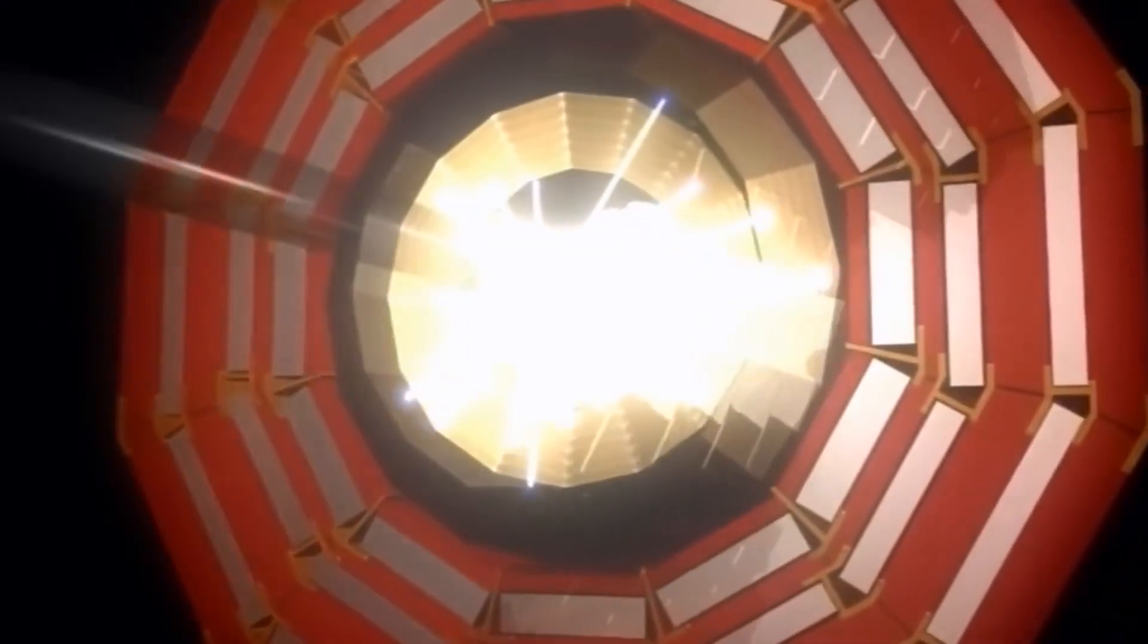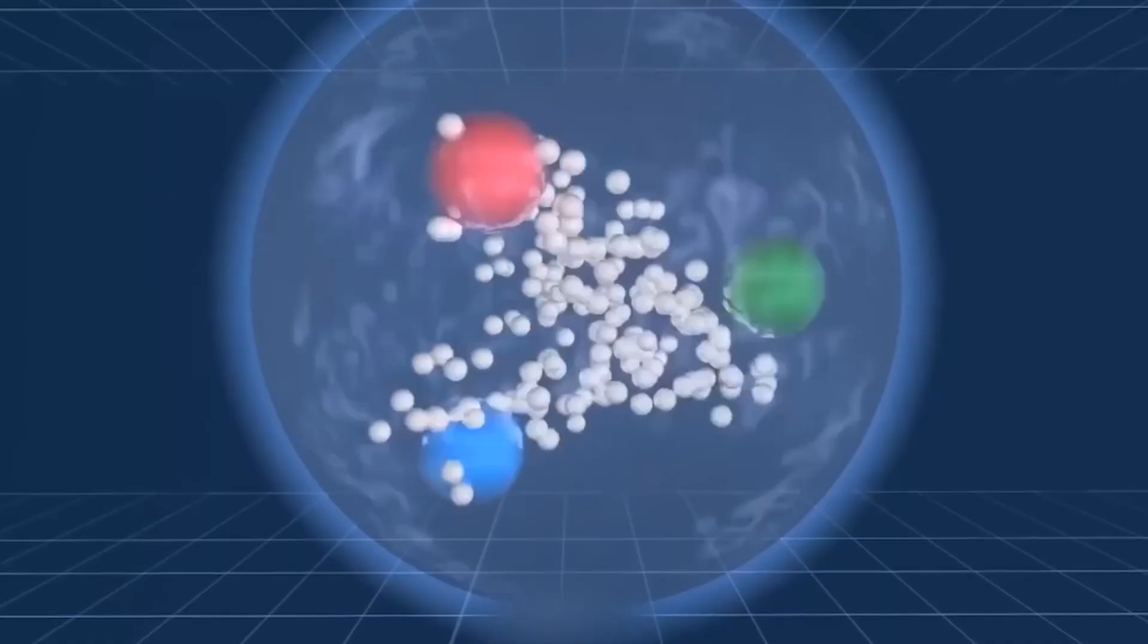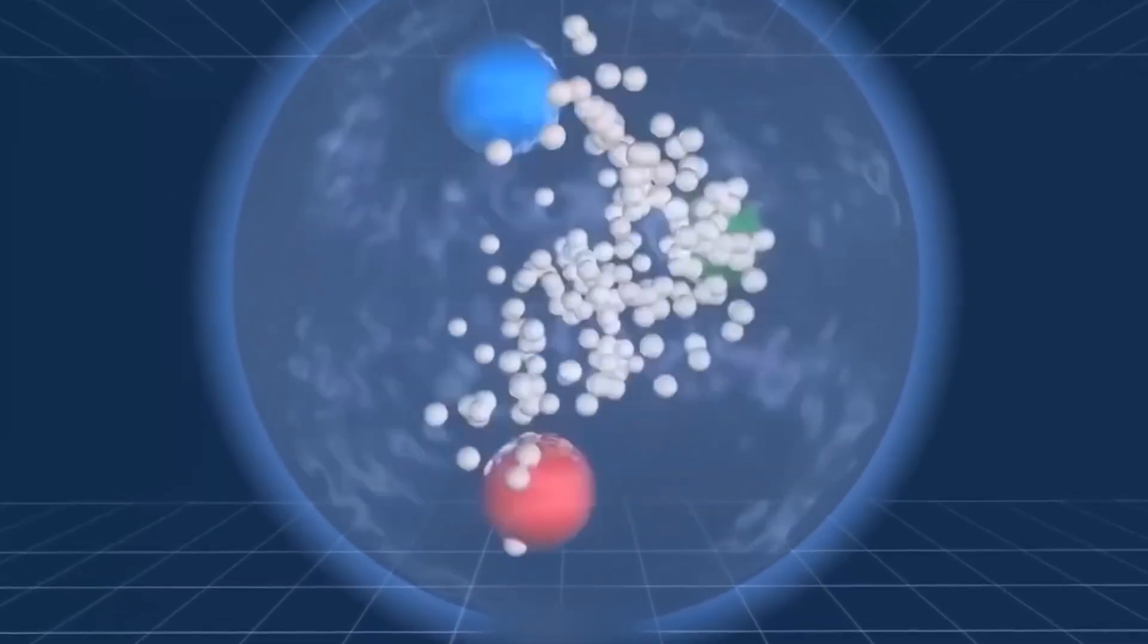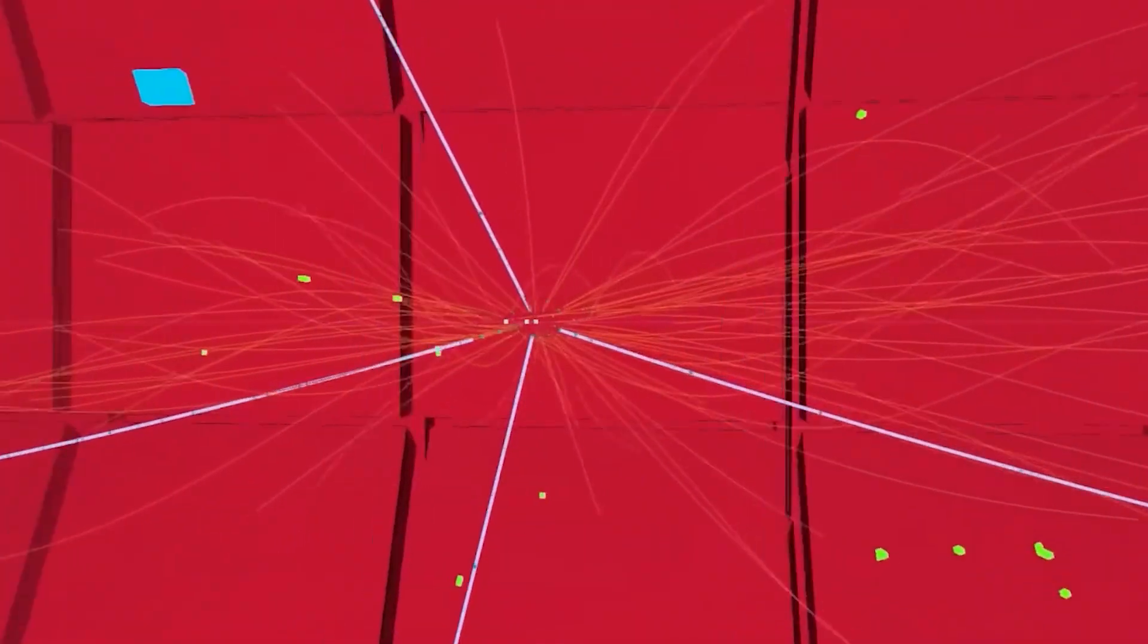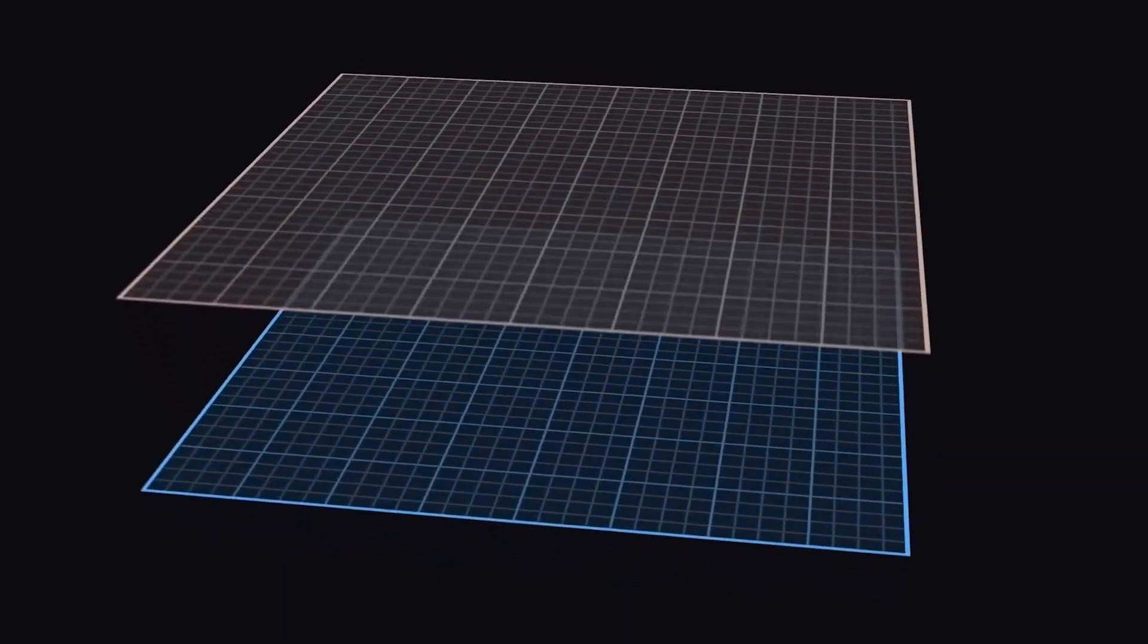A particle's mass determines how greatly it fights its change in speed or status when it experiences a force. Not all fundamental particles have mass. The particle of light, called the photon, carries the electromagnetic force and has no mass at all.